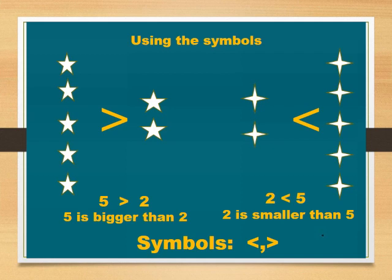Then, next picture: 2 stars and 5 stars. 2 is smaller than 5. So here we write 2 is smaller than 5. And here are the symbols: smaller than and bigger than.